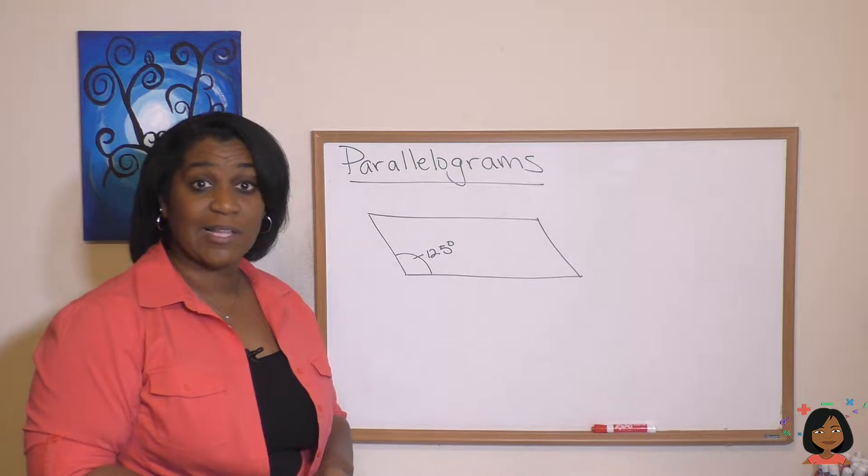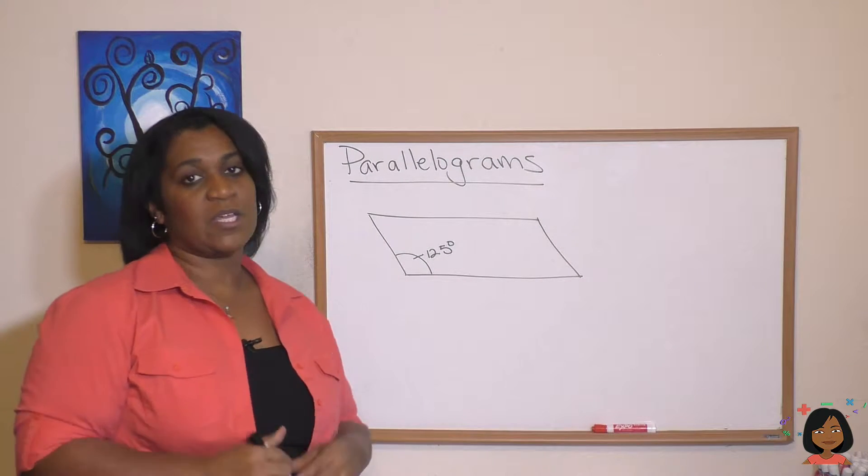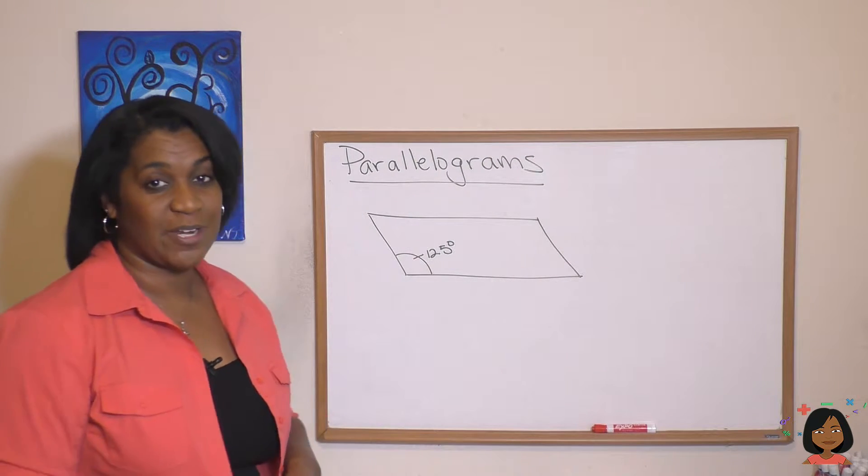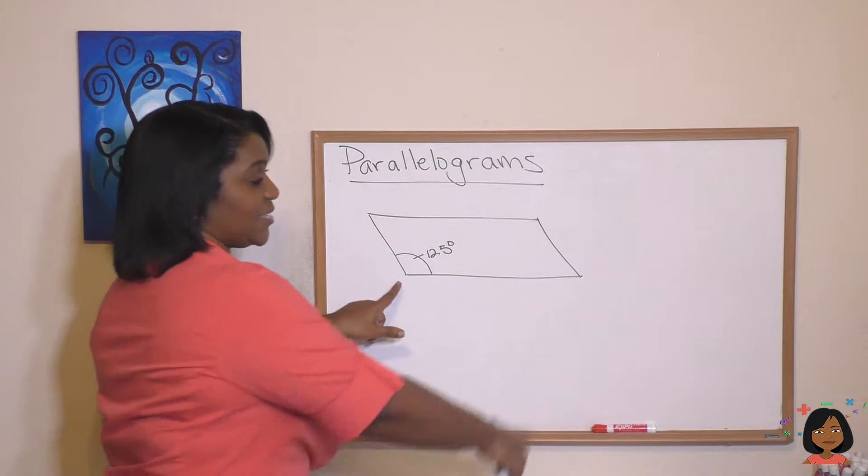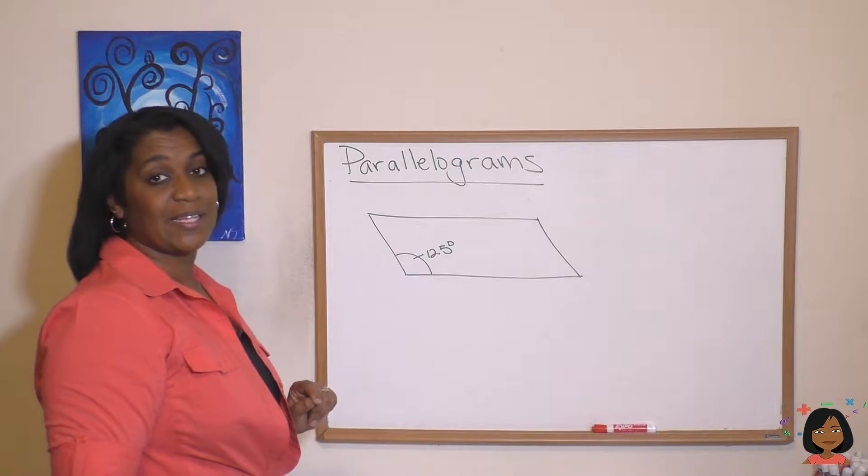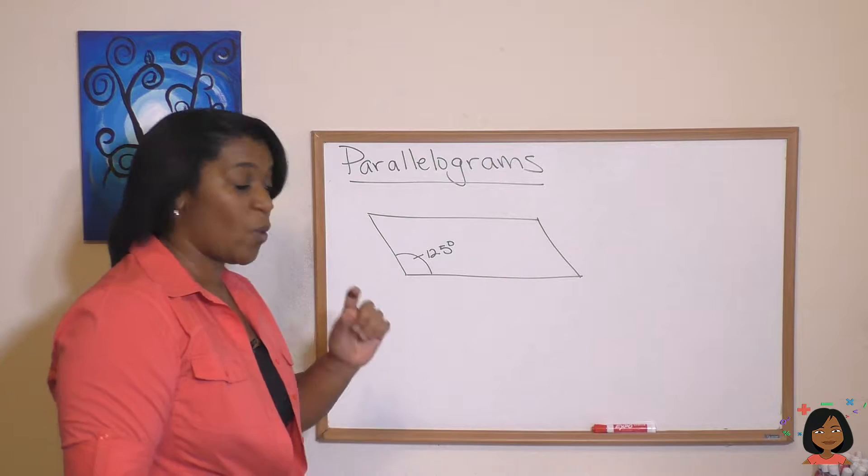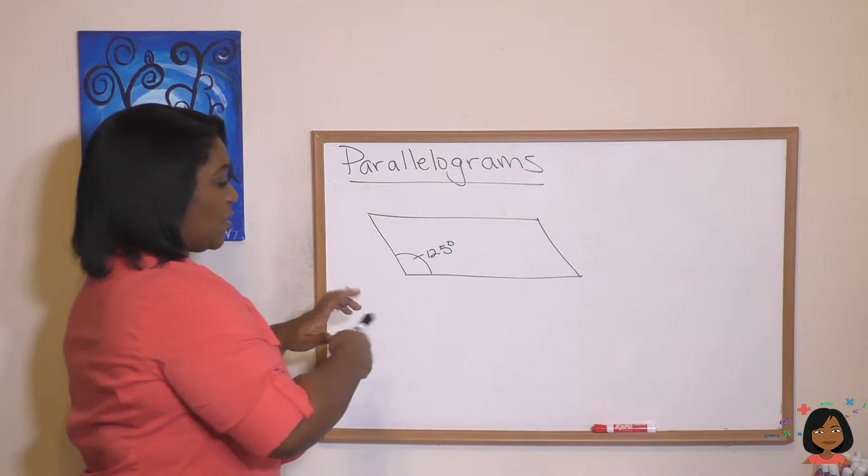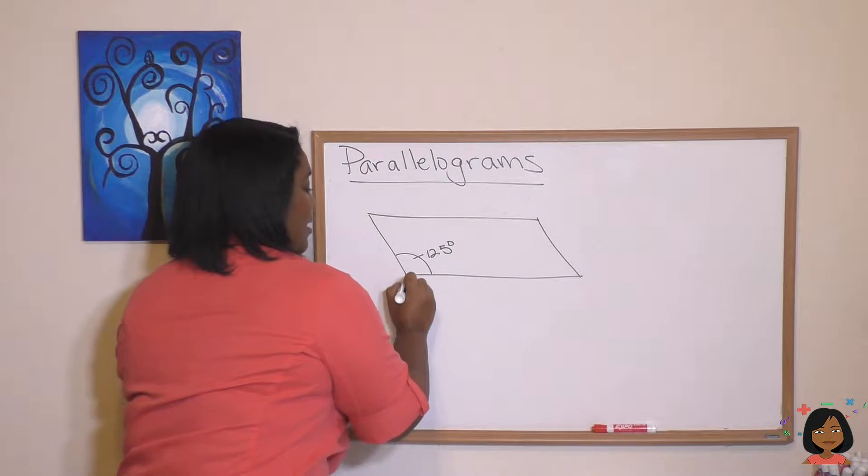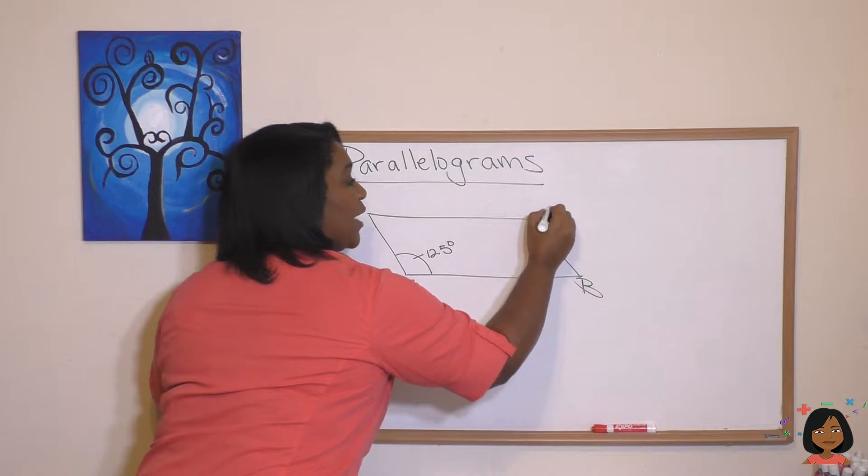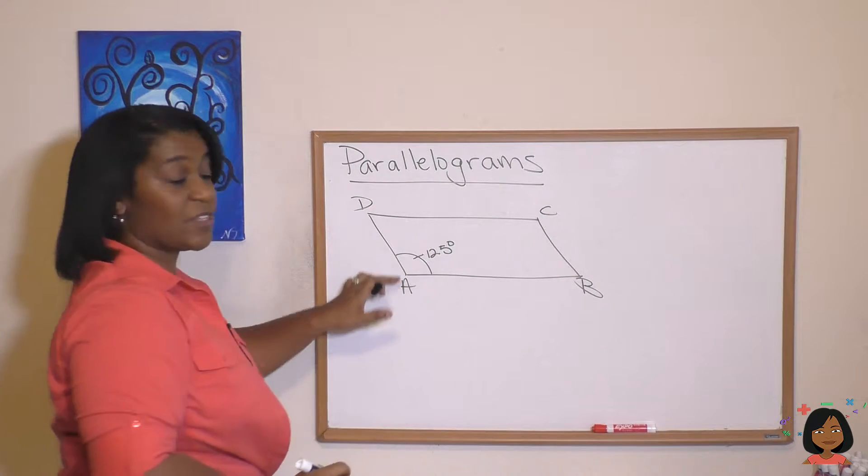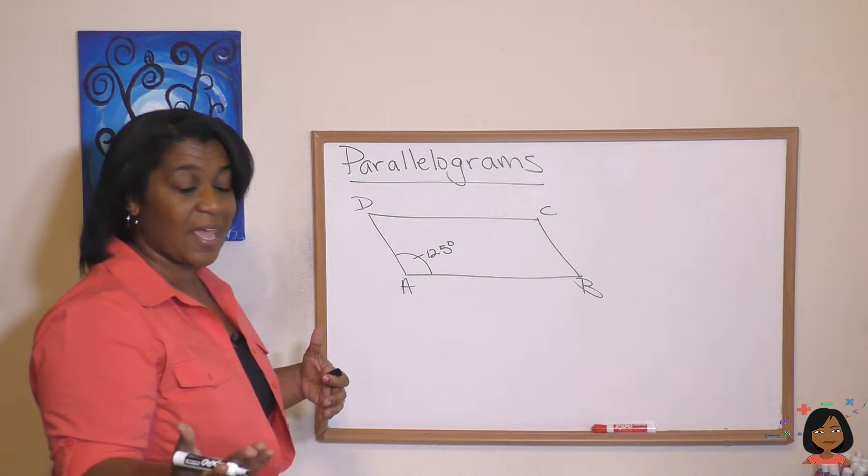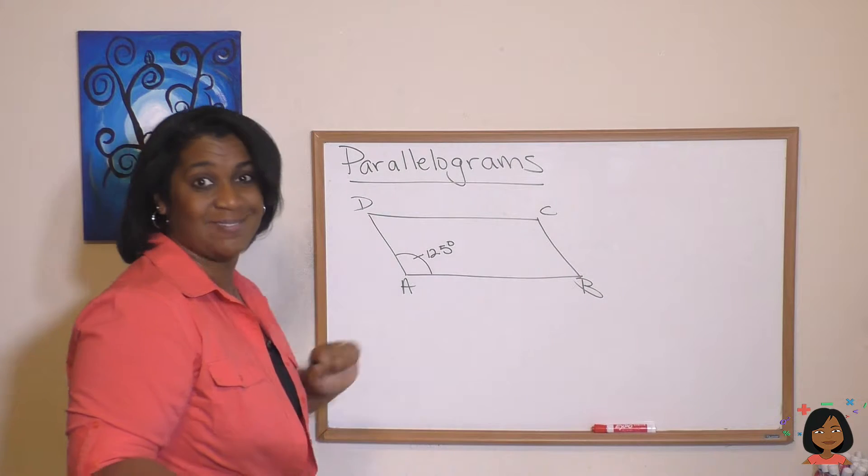There's two things I want to introduce you to. The first one is that the adjacent angles of a parallelogram—remember adjacent means the ones that are next to each other—so I'm going to go ahead and give these a label: A, B, C, and D.